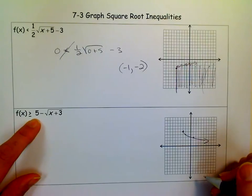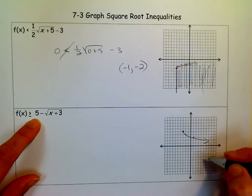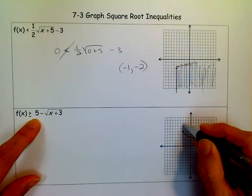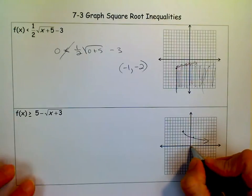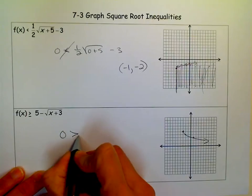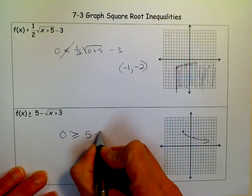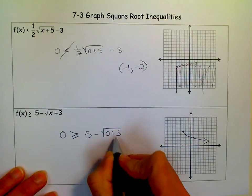But now I need to know whether to shade up or down. So I know there's that line there, but I need to know. So I'm going to pick (0,0) again because that's my favorite point to pick.